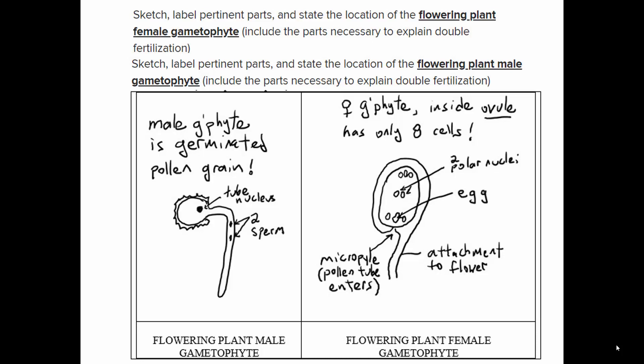The female gametophyte is contained within the ovule and has eight cells, of which we're really interested in three. Two are in the middle, sometimes called the central cells or polar nuclei, and then there's the all-important egg. There's also a small opening called the micropyle, and what happens is that the pollen tube grows down the style and enters into the ovary and into the ovule through the micropyle.